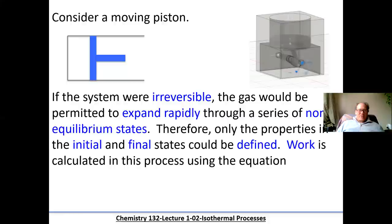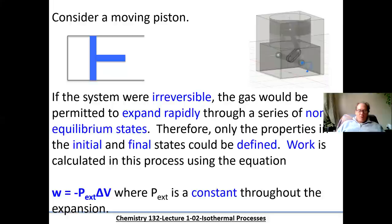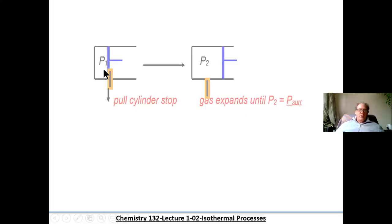Consider this moving piston. If the system were irreversible, the gas would be permitted to expand rapidly through a series of non-equilibrium states. The properties at the initial and final states you could define, and the work is calculated using this equation: work equals minus P external times delta V, where the external pressure is constant throughout the expansion.